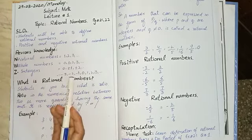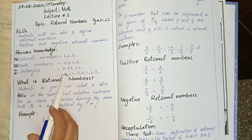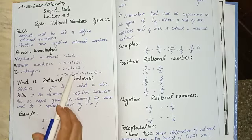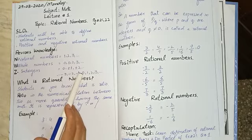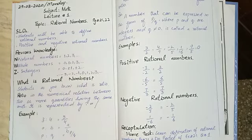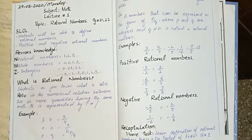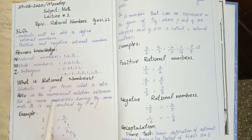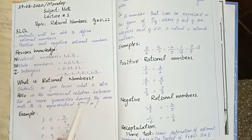Z shows integers = 0, ±1, ±2, and so on. Now, dear students, what is rational numbers? Students, as you know, what is ratio? Ratio is the numerical relation between two or more quantities having the same unit.